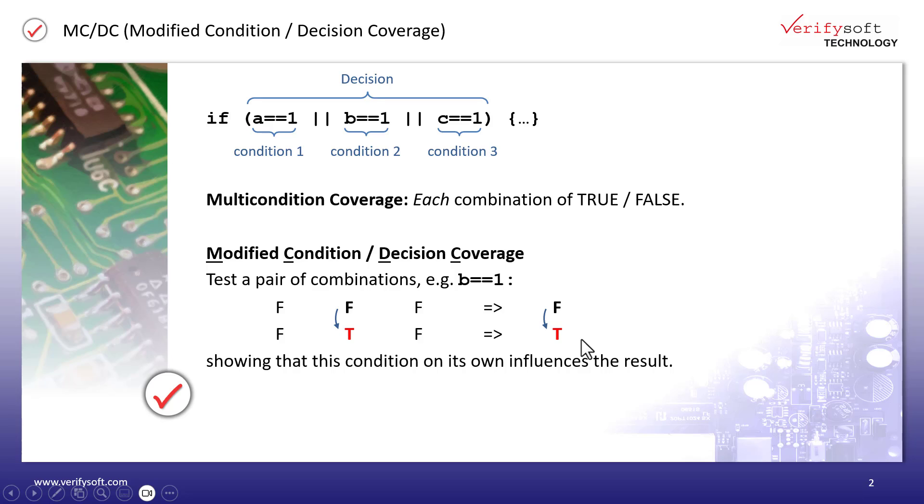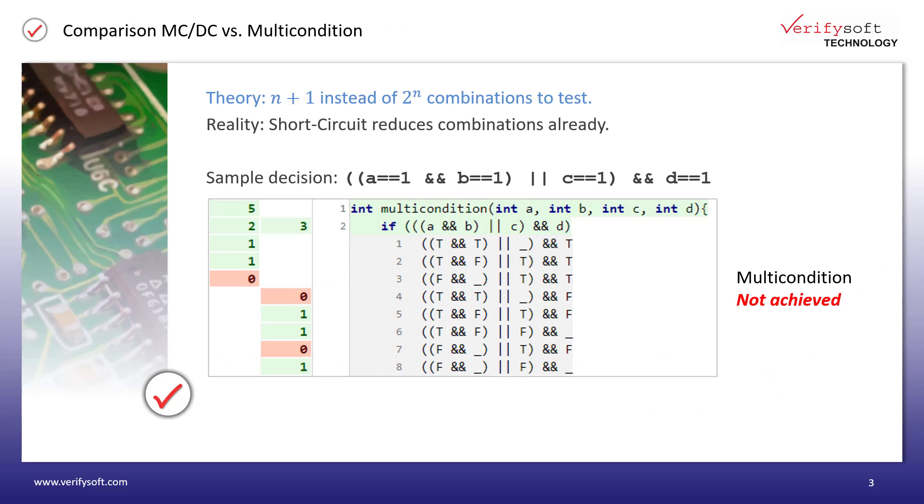That was a very simple example. Now let's add one more condition. If n is the number of conditions within the decision, achieving multi-condition coverage requires 2 to the power of n test cases. For each combination of four atomic conditions, this results in 16 tests. In comparison, MCDC coverage can be achieved by just n plus 1 tests, here 5, as I will show in the example below.